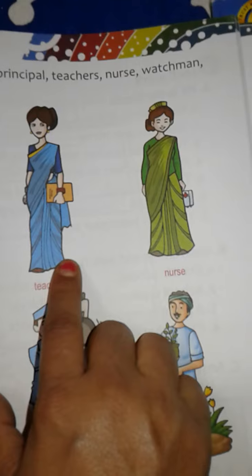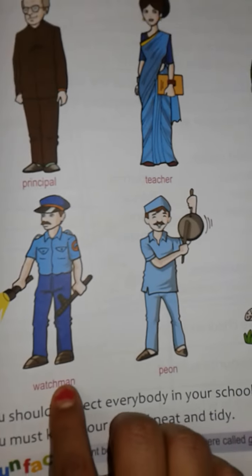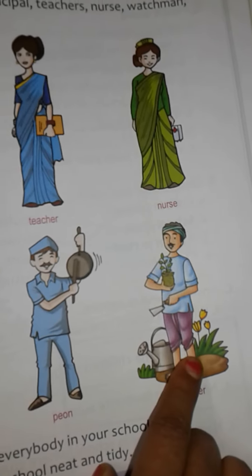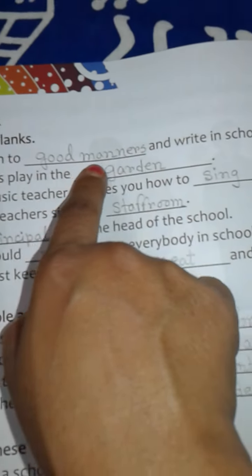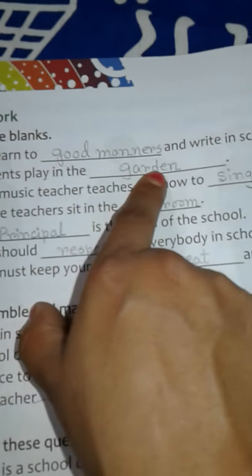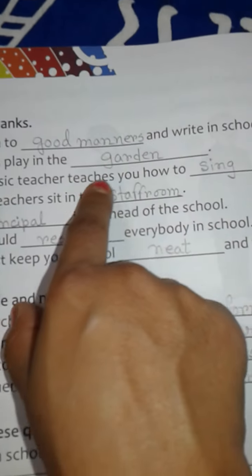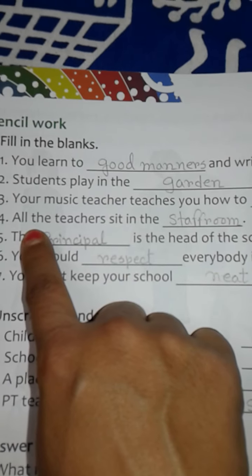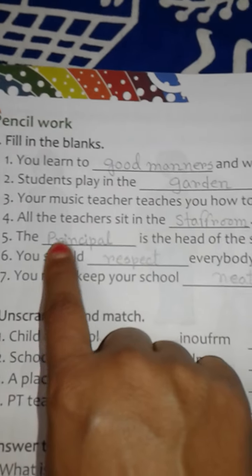In our school we have a principal, teachers, nurse, watchman, peon, and gardener. Students learn good manners and how to read and write in school. Students play in the playground. Our music teacher teaches us how to sing. All the teachers sit in the staff room and the principal is the head of the school.